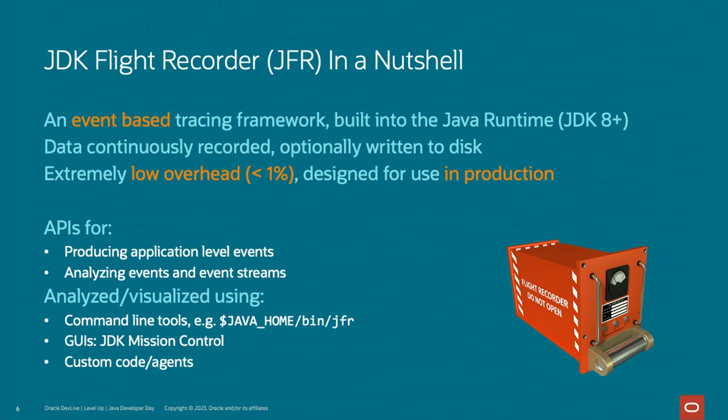Flight Recorder is an event-based tracing framework that we built into the Java runtime itself — I'll sometimes say JFR, that's the abbreviation we use. Much like a real flight recorder, it continuously records data about everything going on in the runtime. This data can be optionally written to disk, but otherwise it's just there in the background in memory collecting information. Flight Recorder has extremely low overhead — one of our design points is to keep that overhead less than 1%. It's designed for use in production. We have very powerful APIs both to produce your own data and to consume it. We have both a graphical user interface and command line tools, and you can use your own agents or code to analyze the data Flight Recorder produces.